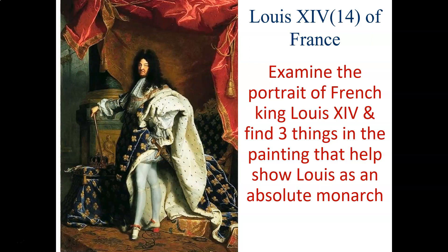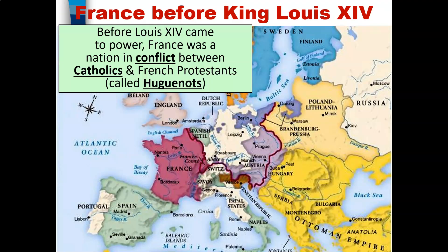By the way, the idea of divine right was challenged by Enlightenment thinkers who opposed absolute monarchs. Right here we have an image of Louis the 14th of France. Pause this video and take a few minutes to look at what made Louis the 14th an absolute monarch. Do you see anything in his clothes, where he's standing, or anything related to his glory?